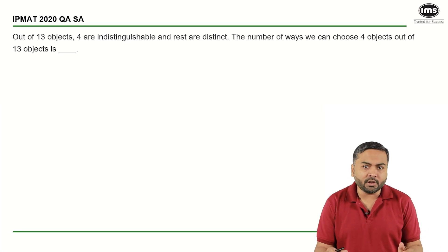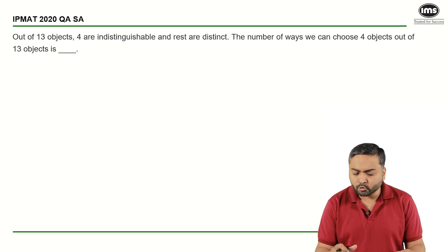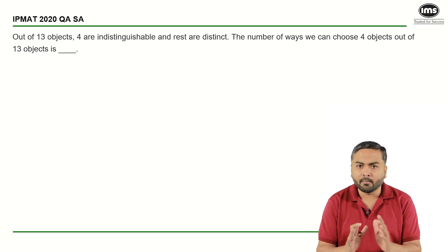Hello everyone, welcome to the series on Best of IPM. My name is Jamin Shah and this particular question is from IPM 2020 QA short answer section. Out of 13 objects, 4 are indistinguishable, which means they're identical, and the rest are distinct. The number of ways we can choose 4 objects out of 13 objects is - pause the video, try the question and then come for the solution.